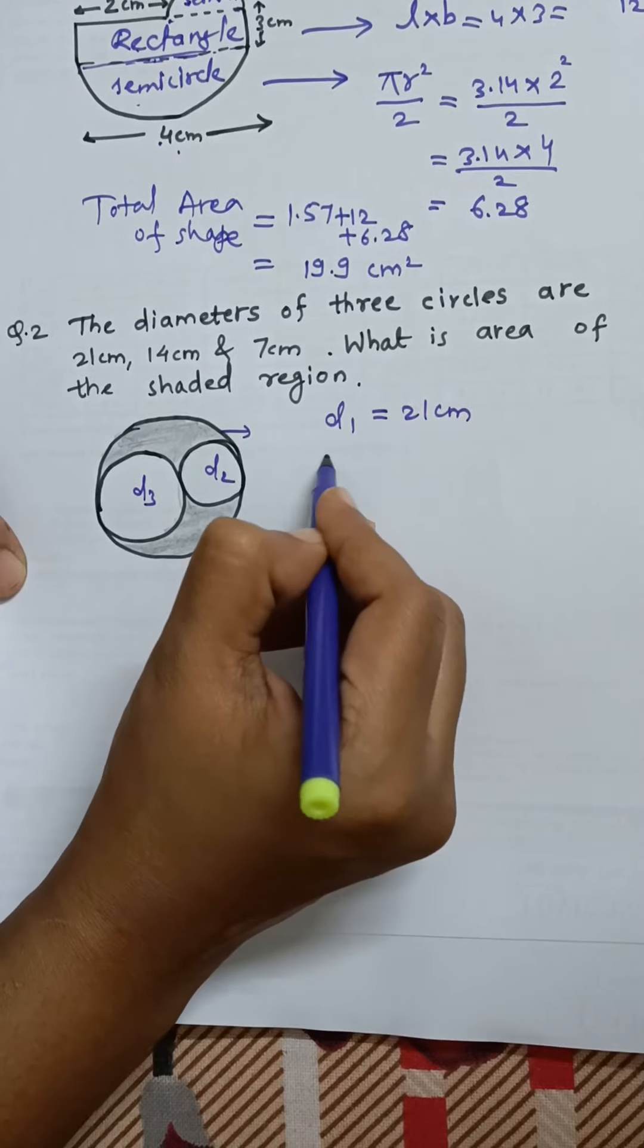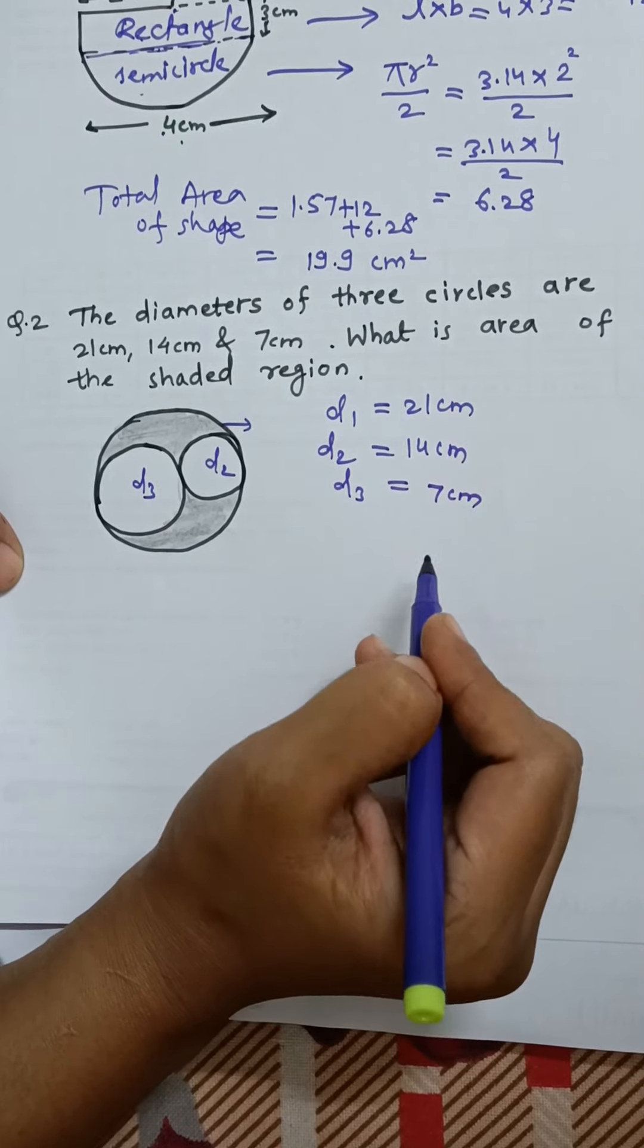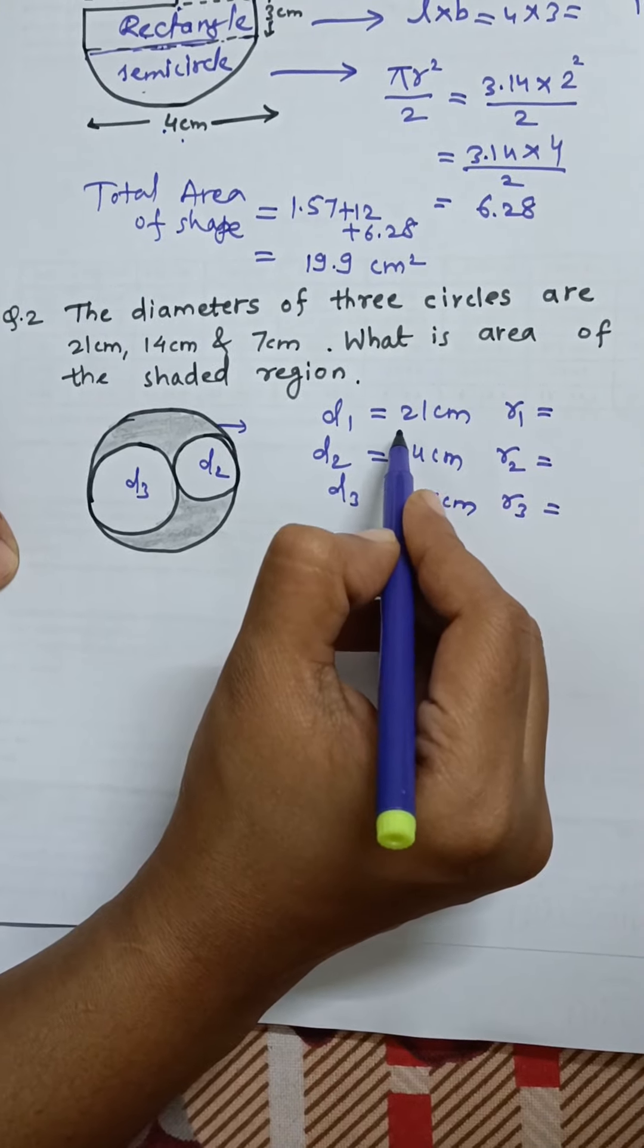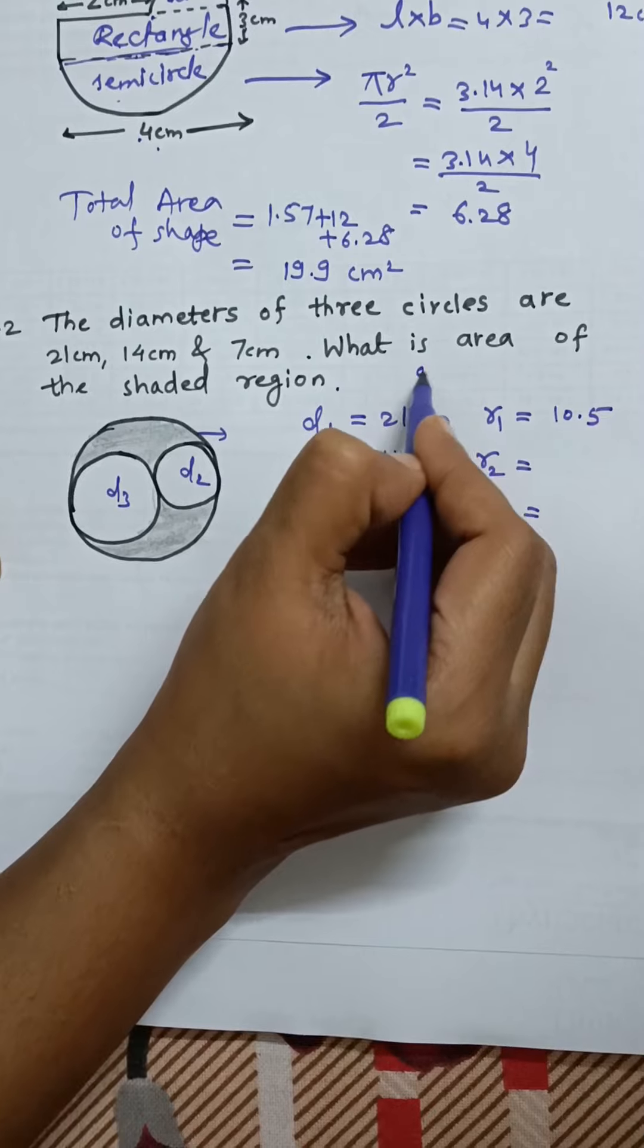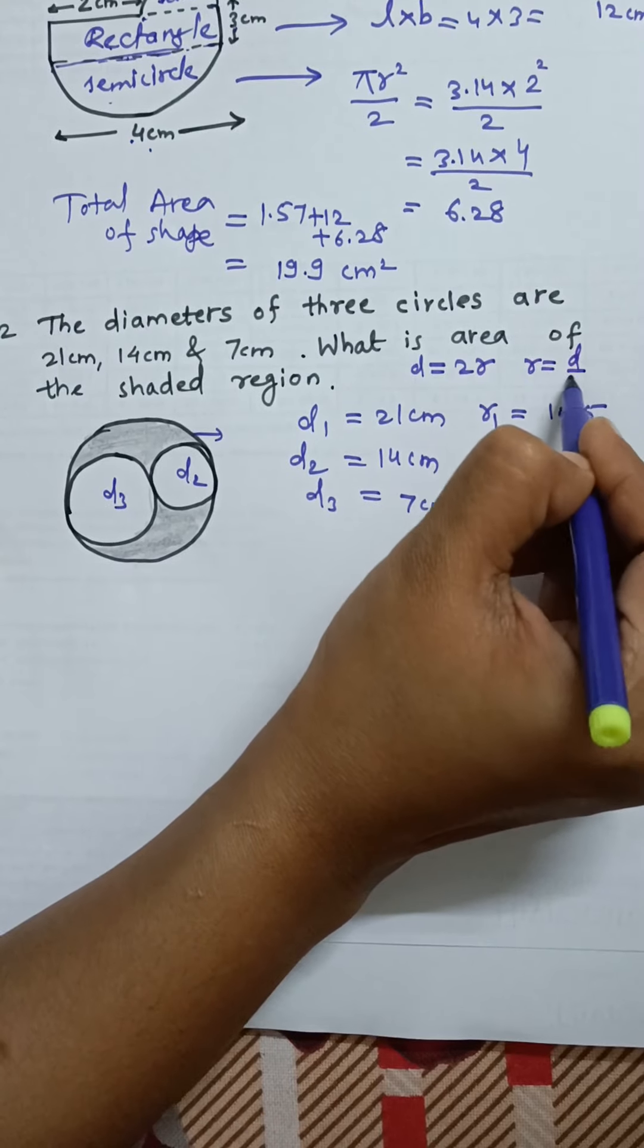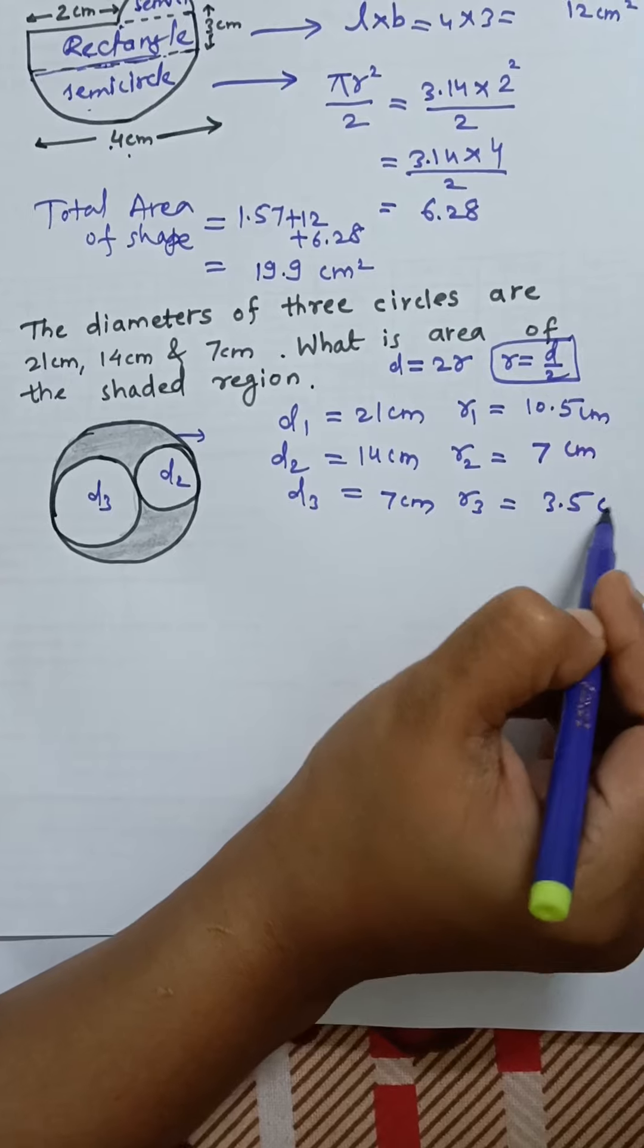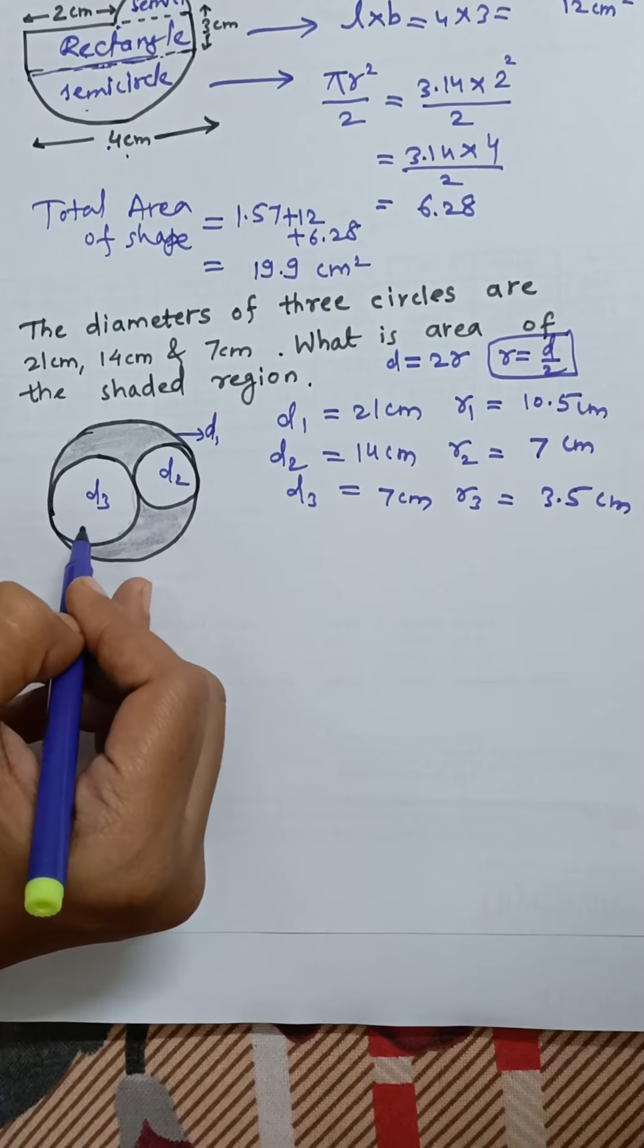d1 is 21 centimeter, d2 is 14 centimeter, and d3 is 7 centimeter. The radii are half of that: r1, r2, r3. For recognizing it, we give the numbers 1, 2, 3. So 21 by 2 is nothing but 10.5. We know that diameter is double of radius and radius is half of the diameter, so just doing by 2. 14 by 2 is 7, 7 by 2 is 3.5. So in this way, these are three radii: r1 for d1, outer d2, and d3.